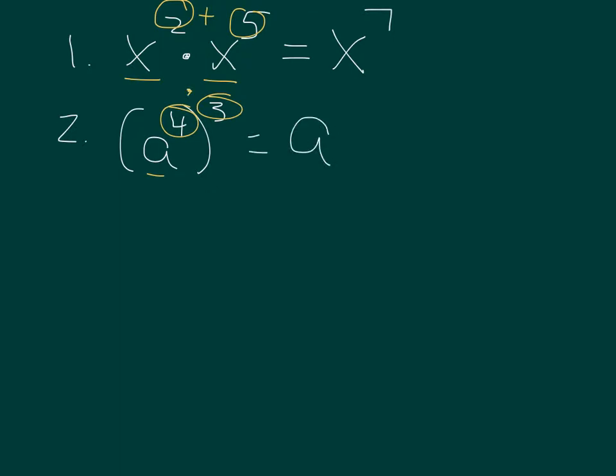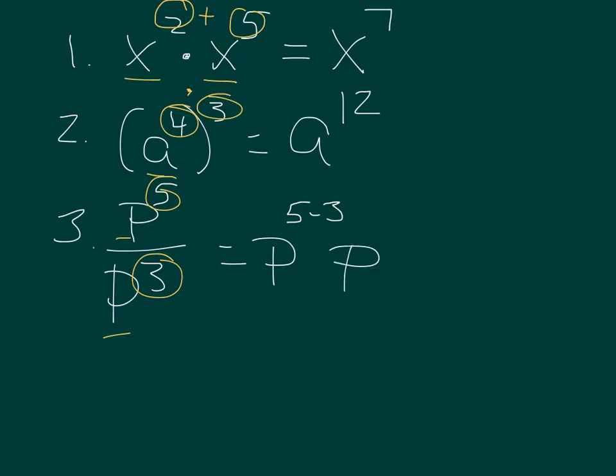Number three, we have a quotient of p to the fifth over p to the third. Again, same base p and p, but we have exponents in a quotient. The exponents will be p to the five minus three. We subtract the exponents, so that gives you p squared.